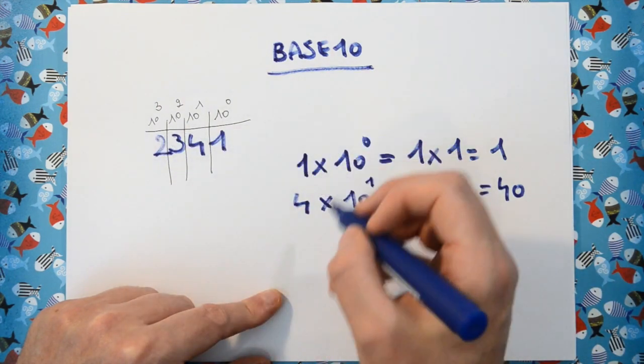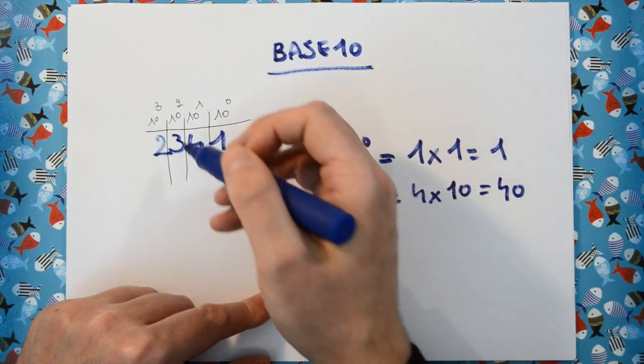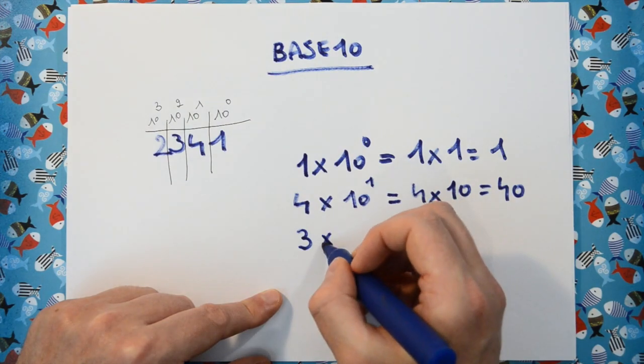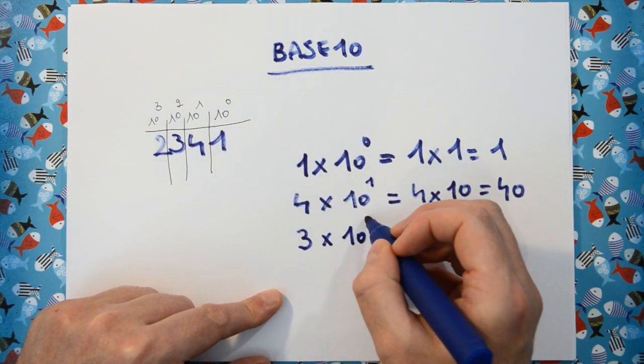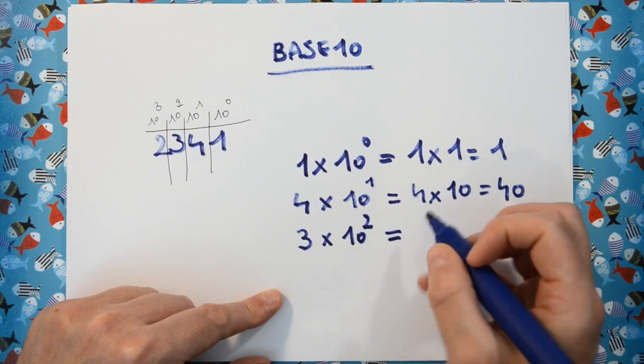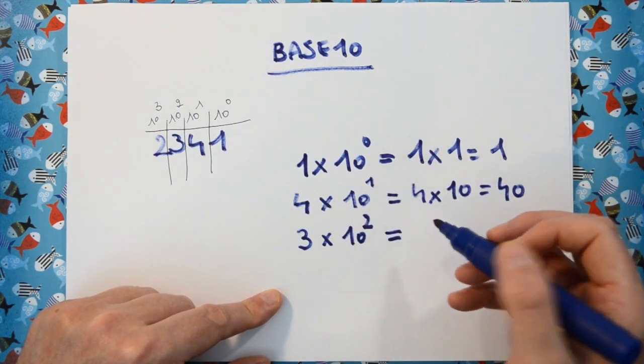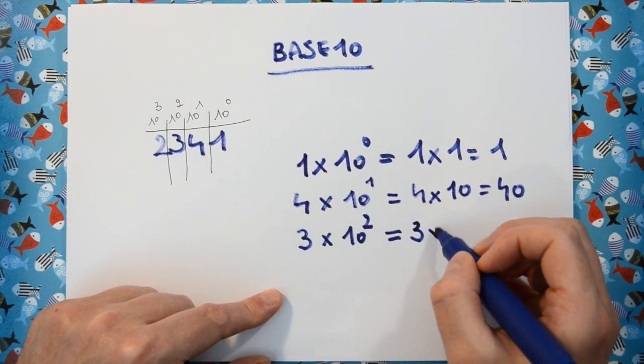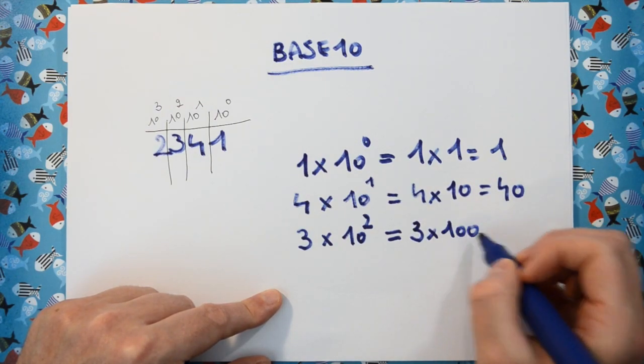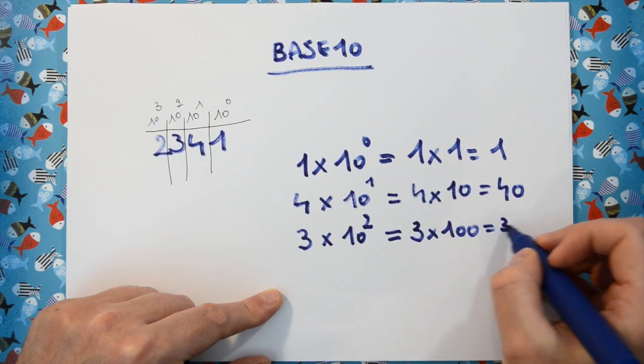Then the third character here is 3. This one stands for how many times we have 10 to the power of 2. 10 to the power of 2 is 10 times 10, which is 100. So we have 3 times 100 equals 300.